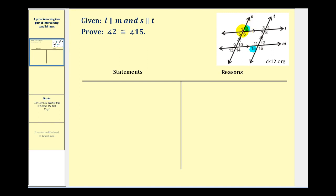We can see that angle two and angle five would be congruent because they're vertical angles. Let's go ahead and mark angle two congruent to angle five. Now looking at the parallel lines S and T cut by L, angle five and angle seven are corresponding angles, and therefore those two angles are congruent.